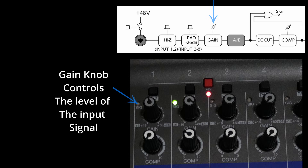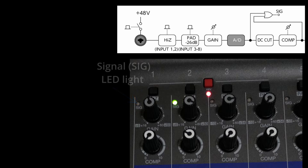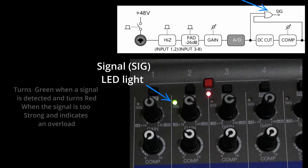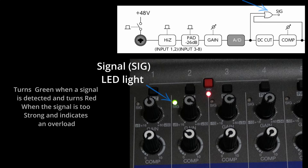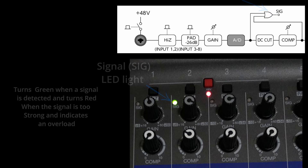This board has two tools to help get the best input signals possible. The SIG LED indicator is located just below the High-Z or Pad button. This LED lights up to indicate the presence of an audio signal — it turns green when it detects the signal, and red if the signal is too strong, indicating an overload. The goal is to maintain a signal strength where the LED remains green and you avoid getting into the red.